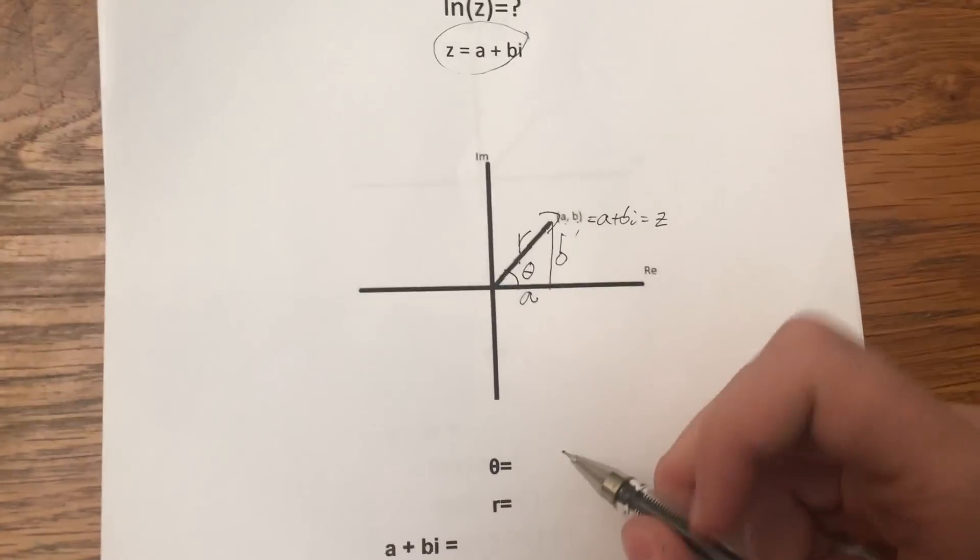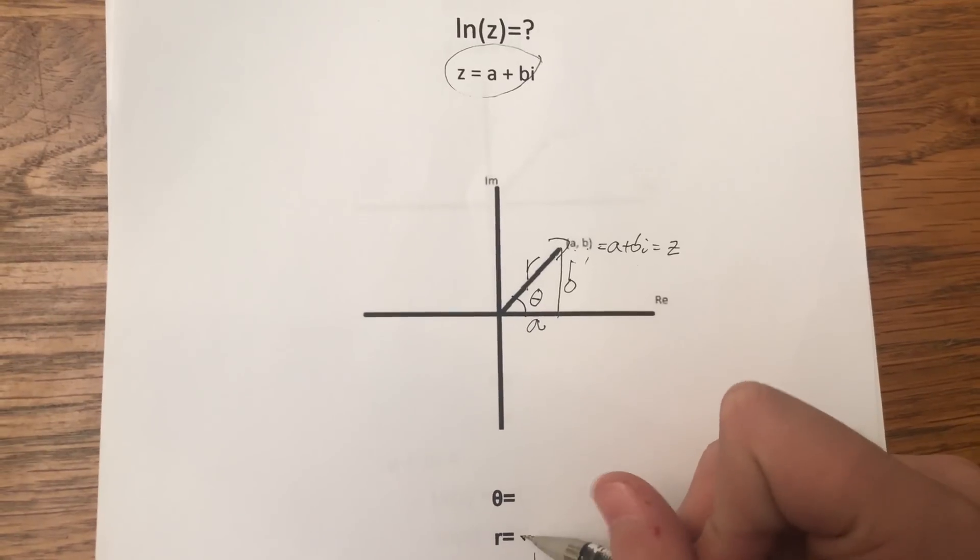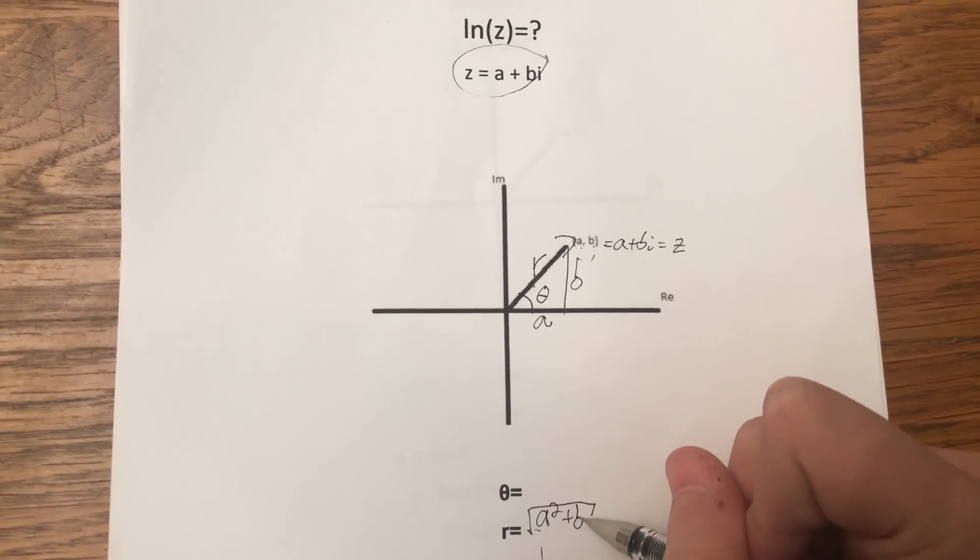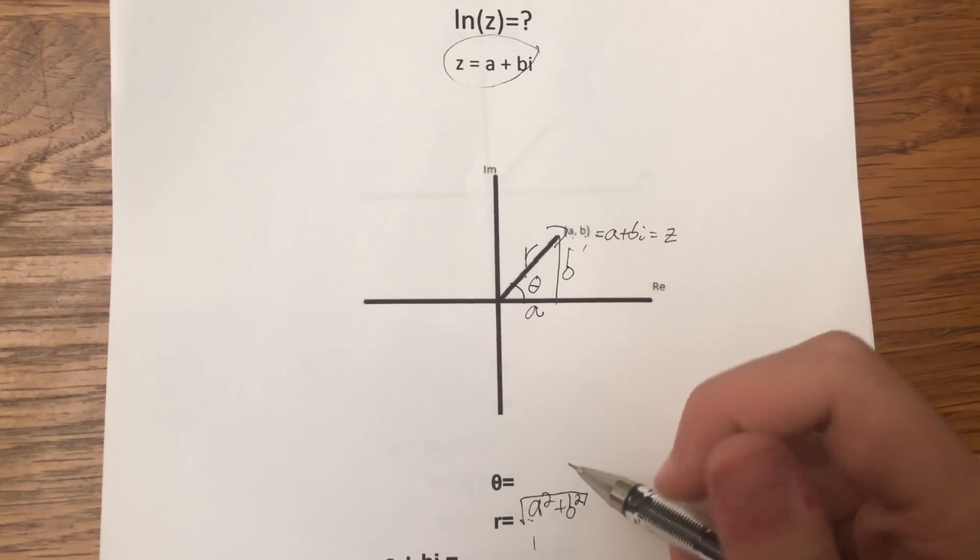We'll start with r because it's easier. r is obviously the square root of a squared plus b squared by the Pythagorean theorem.